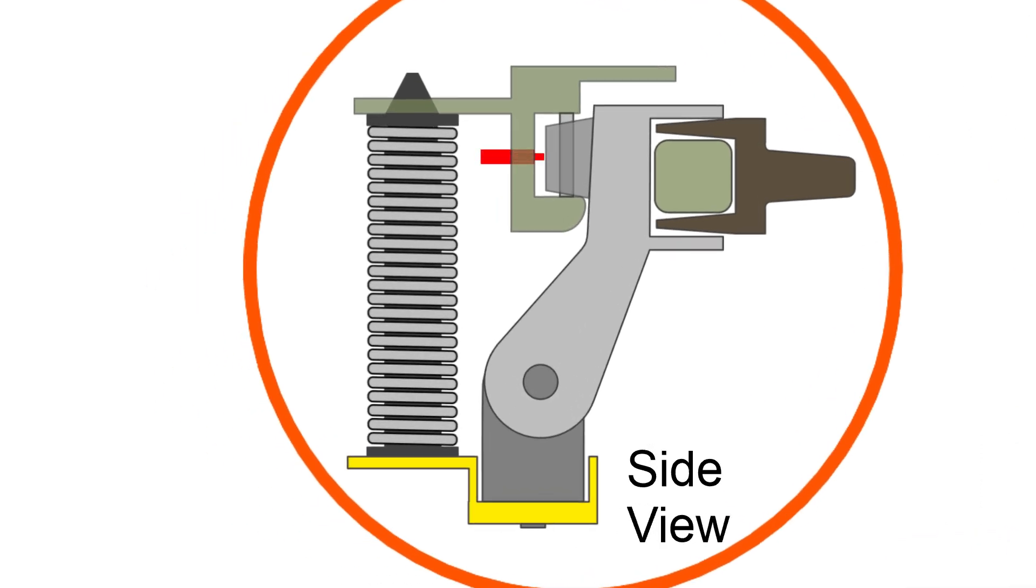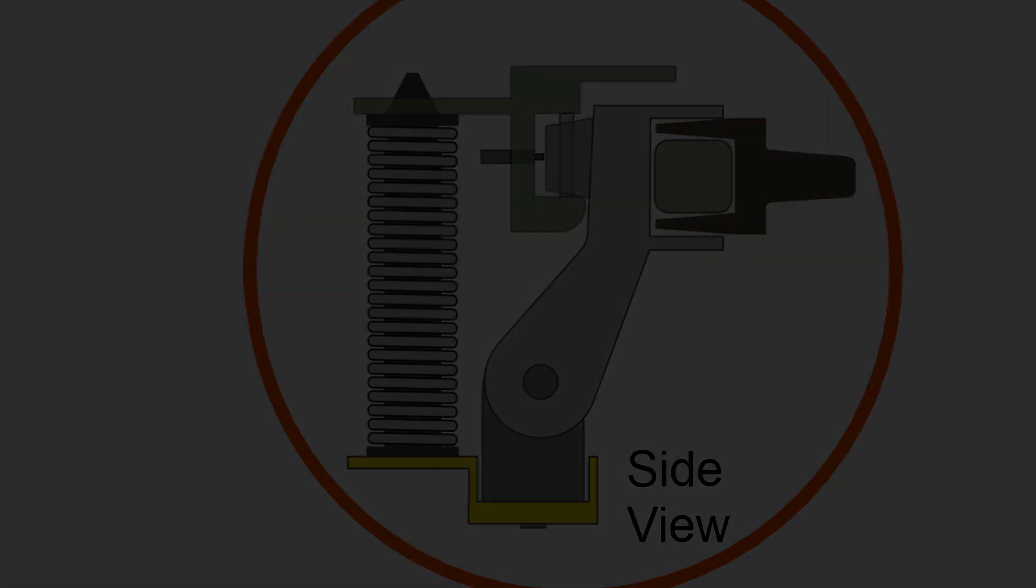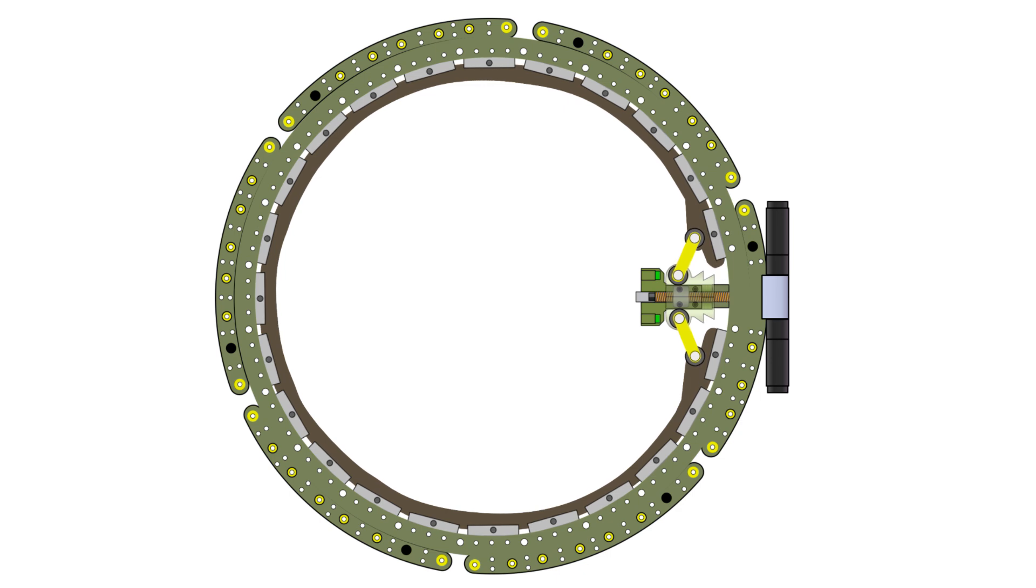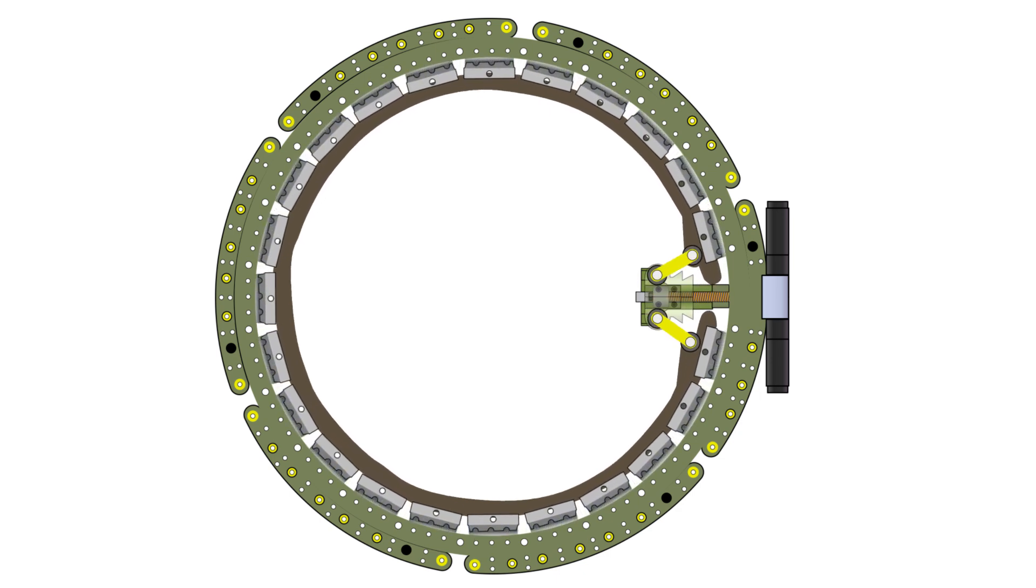When it's time to release the payload, the motorized release mechanism causes the slide tube to move inwards. This causes the entire mechanism to snap inwards and the retaining compression ring to be pulled away from the set of engagement leaves.